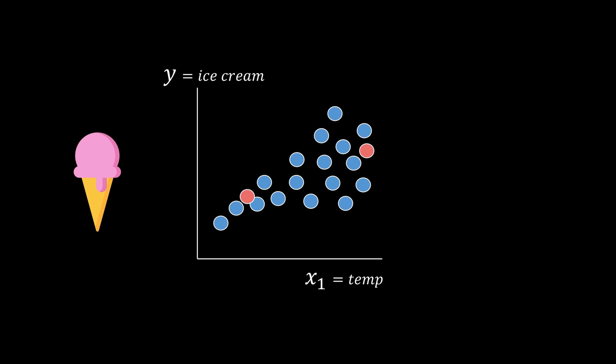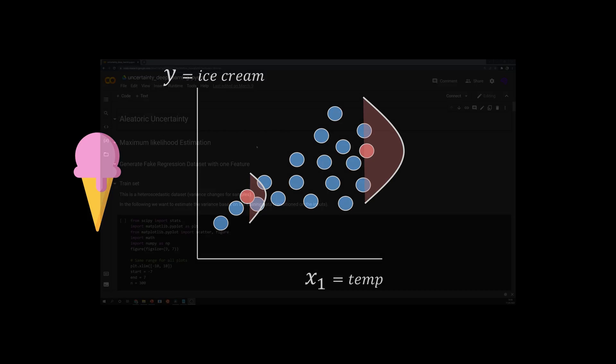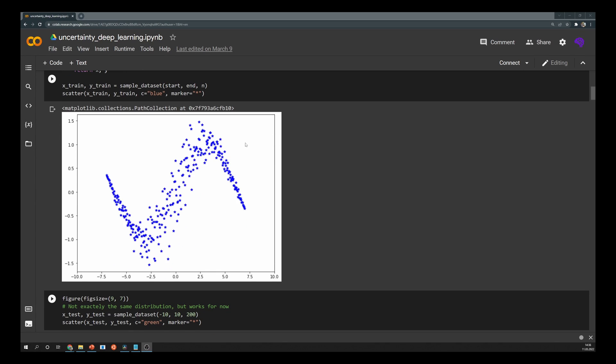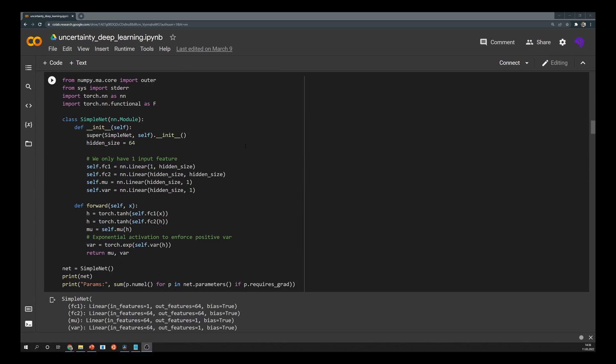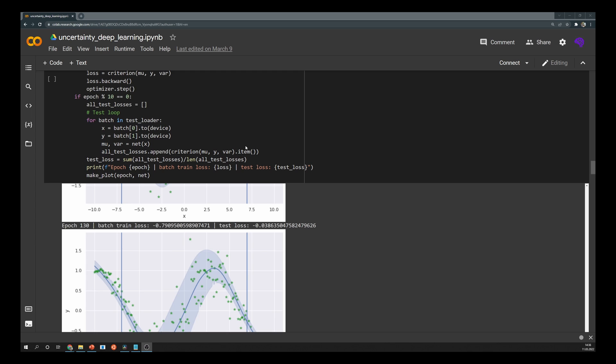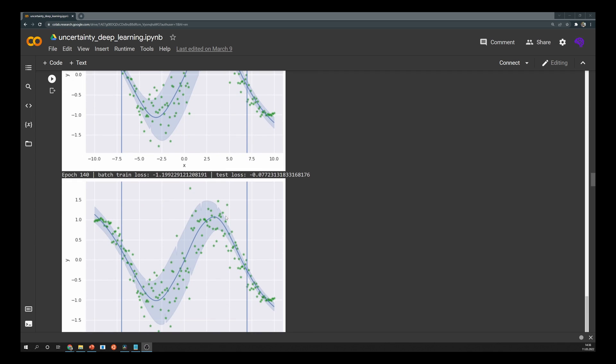In our previous ice cream example, the predictions highlighted in red are now not simply points anymore, but instead distributions over y. And those distributions are based on the underlying data uncertainty. In the next part, I will show you a Google Colab notebook with an implementation of exactly that and also all other methods I mention here.